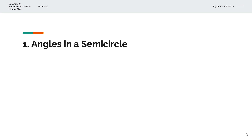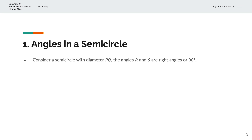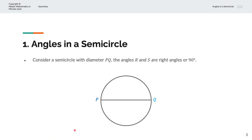So, what are angles in a semicircle? Consider a semicircle with diameter PQ. The angles R and S are right angles, or they're 90 degrees.